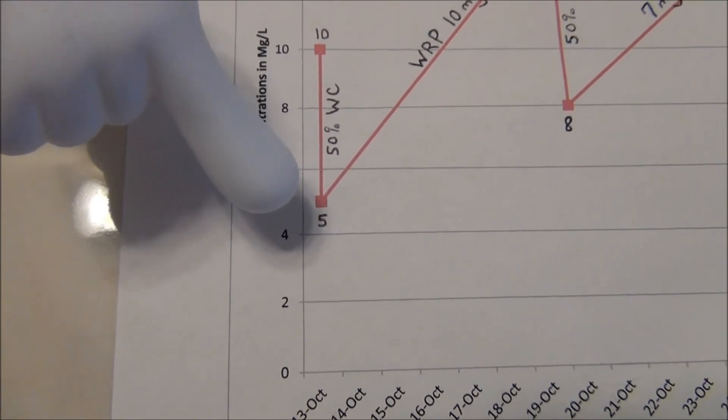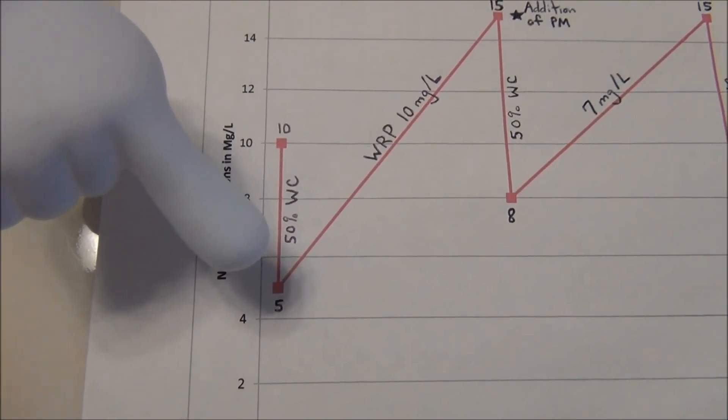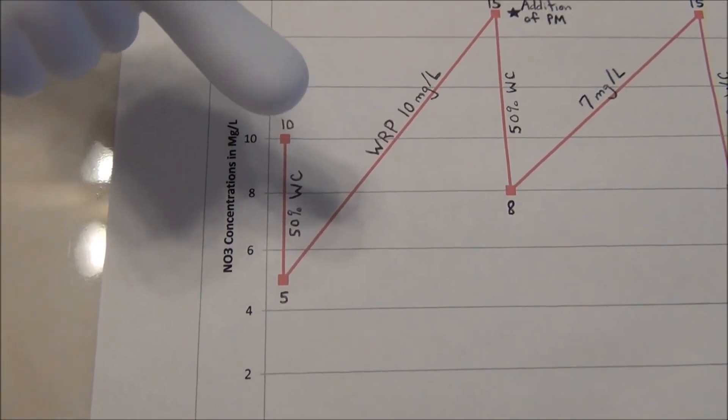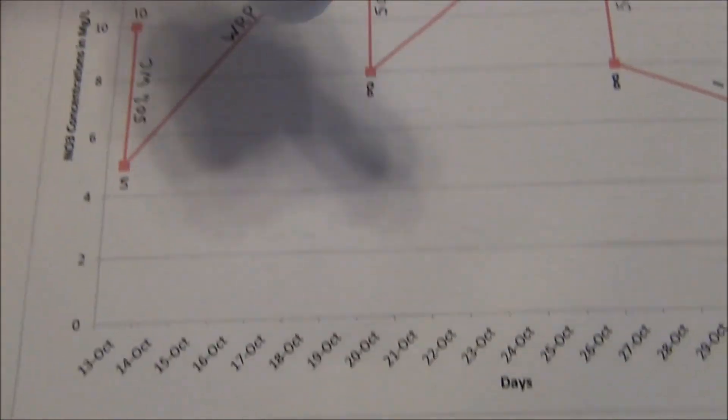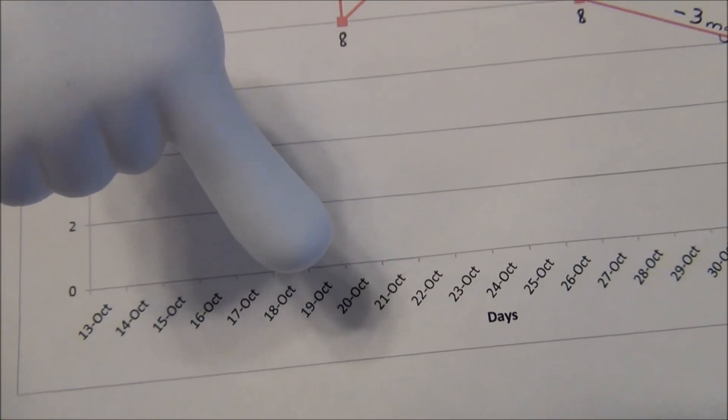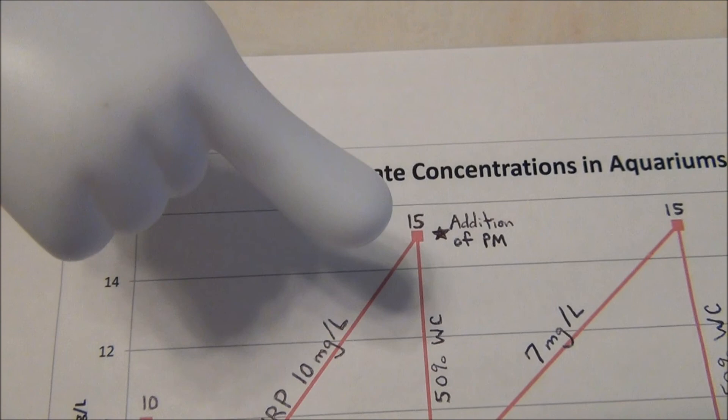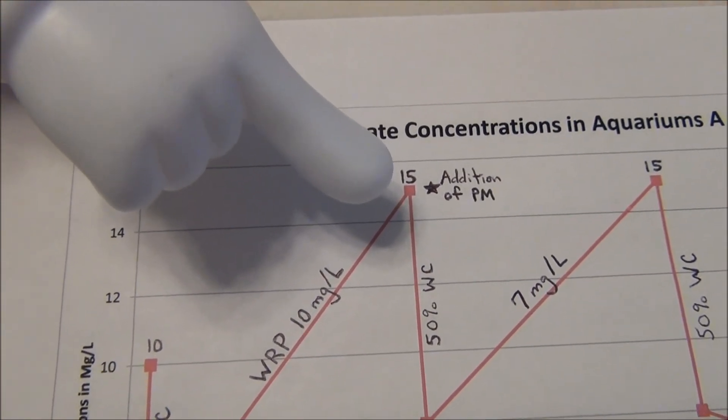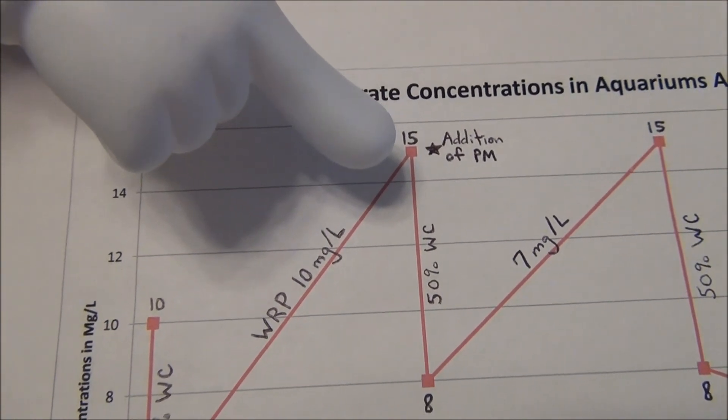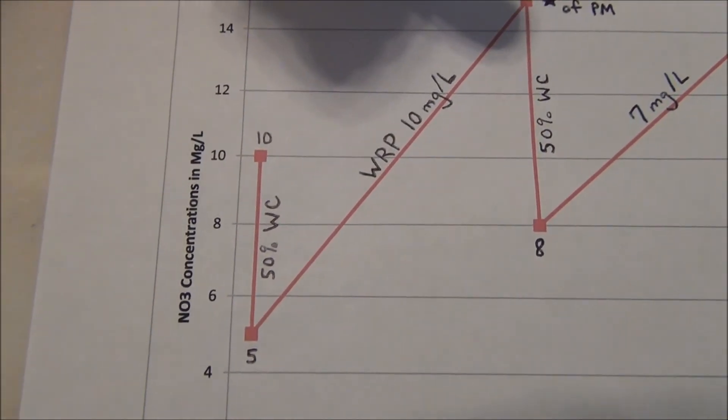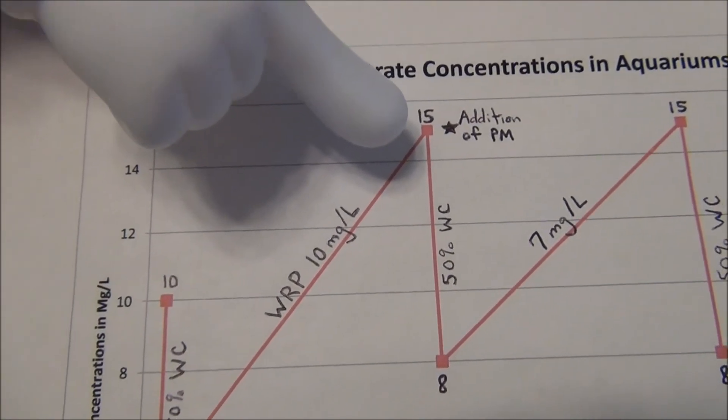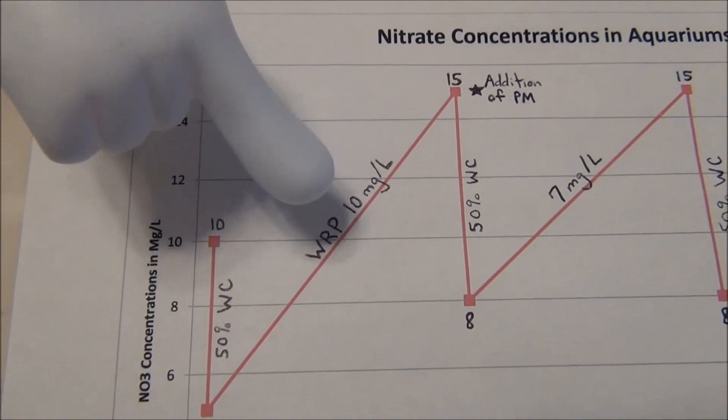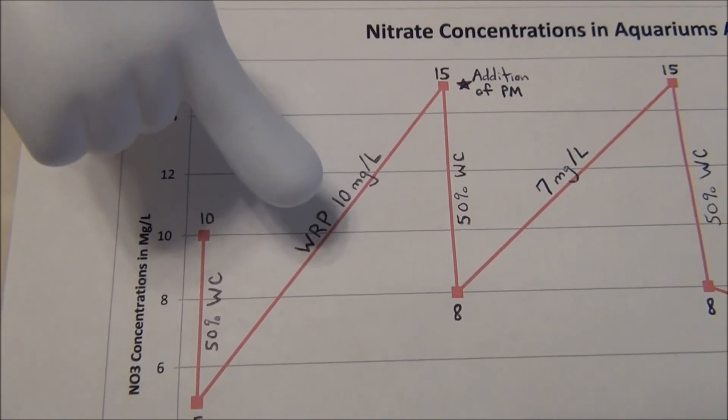Then we allowed one week to elapse without conducting any water changes. The aquariums were given three feedings each day. One week later, on October 20th, we did a nitrate test before our water change. The results were 15 milligrams per liter in each aquarium. That was an increase from 5 to 15, an increase of 10 milligrams per liter. So 10 milligrams per liter was our weekly rate of production.